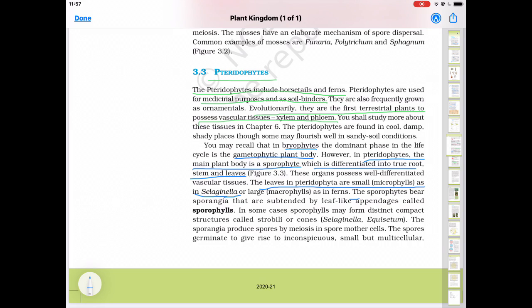The sporophyte bears sporangia that are subtended by leaf-like appendages called sporophylls. On the sporophyte sometimes strobilus is present as shown in figure 3.3b. On the top strobilus structure is shown. The strobilus bears many sporophylls. It has many leaf-like structures known as sporophylls. On the sporophylls sporangia are present. So in the sporangia then spores will be produced.